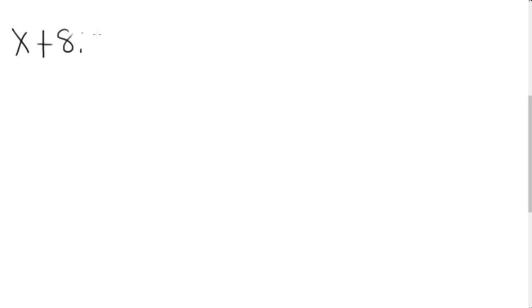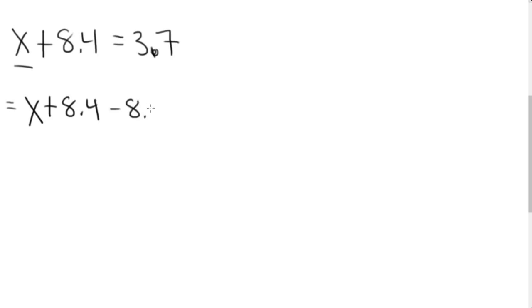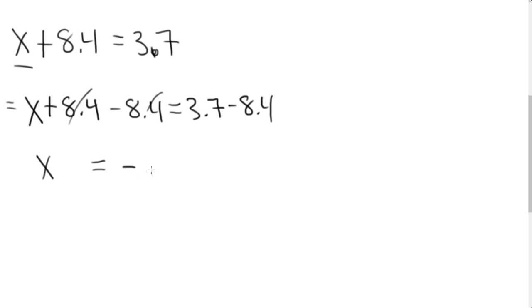Now let's solve equations involving decimals. We use the same process as with integers — the same rules apply. For example, x plus 8.4 equals 3.7. I add the opposite, subtracting 8.4 from both sides. On the left side the 8.4 cancels, leaving x. On the right I have 3.7 minus 8.4: different signs, so I bring down the sign of the larger, which gives me negative 4.7.